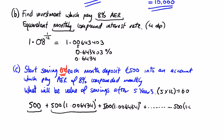£500 by 1.006434 to the power of 59. Now it doesn't change n, n is still 60, the number of terms in the sequence.